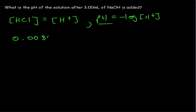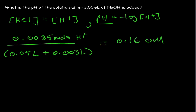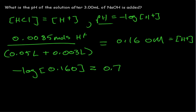We have 0.0085 moles of H⁺ in the flask — since HCl fully dissociates, moles of HCl equals moles of H⁺. Our total volume is the initial 0.05 liters of HCl plus the 0.003 liters of NaOH added, giving a concentration of 0.160 molar. That is our H⁺ concentration. The negative log of this value gives us our pH, which is 0.79. So the pH in the flask after adding 3 milliliters of NaOH is 0.79.